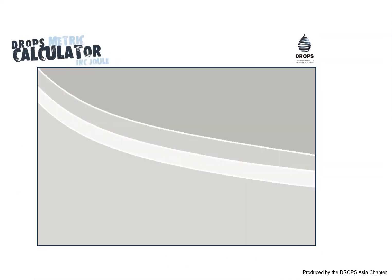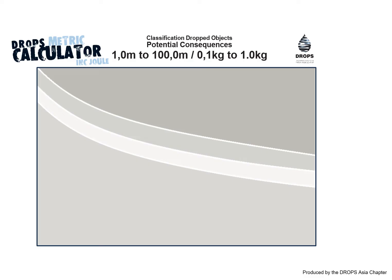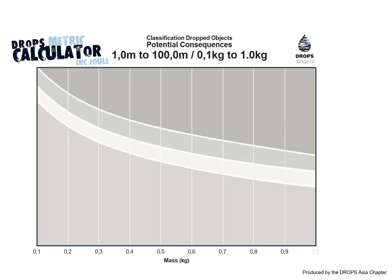The DropsMetric Calculator provides a common benchmark for classifying the potential consequences of dropped objects. It factors in two main variables: the mass of the object and the height from which it falls.